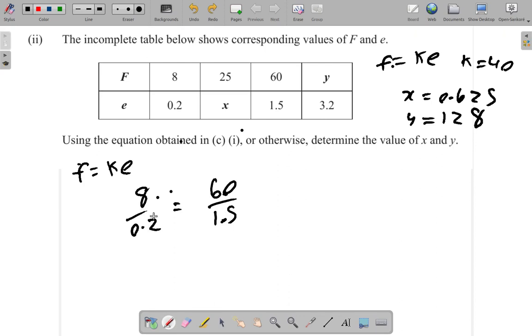Multiply 0.2 by 10, you get 2. So multiply this by 10, it becomes 2. The top by 10, it becomes 80. 80 over 2 is 40. So they're directly proportional, f over e. So far it shows 40.